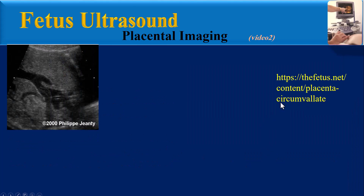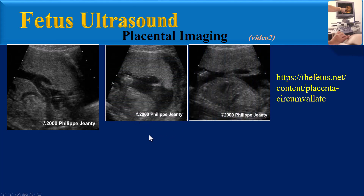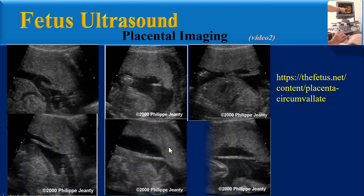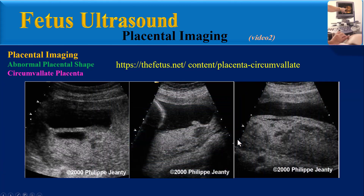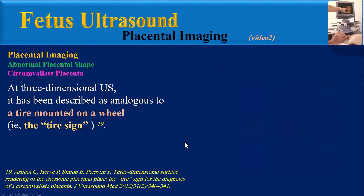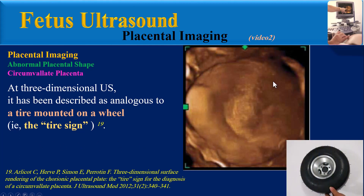This photograph shows the double-back fold in the membranes at their attachment near the margins of the placental fetal surface. These images, taken from the fetus.net website presented by Professor Felipe Jeanty, show different views of circumvallate placenta in multiple cases. At three-dimensional ultrasound, circumvallate placenta has been described as analogous to a tire mounted on a wheel — the 'tire sign.' A 3D surface rendering of the placenta shows a circumferential depression with a thick peripheral ring on the chorion plate.